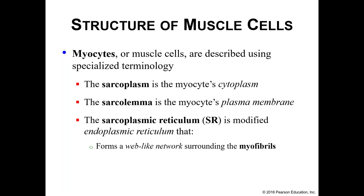We also have a modified endoplasmic reticulum called the sarcoplasmic reticulum. You may remember that rough endoplasmic reticulum made proteins and smooth endoplasmic reticulum made lipids — but the sarcoplasmic reticulum doesn't do either of those things. It has a brand new function that we'll get to in just a second. All of this works together, forming a web-like network surrounding the myofibrils that make up your muscle.